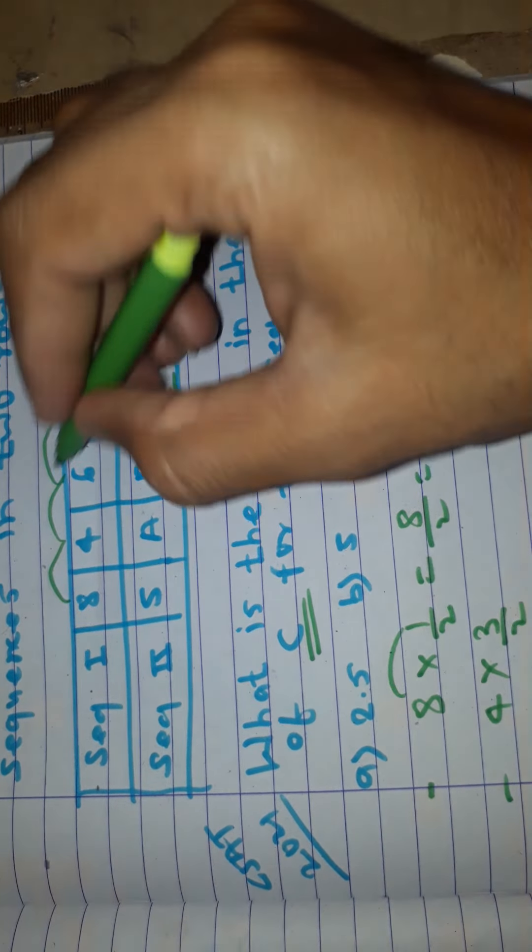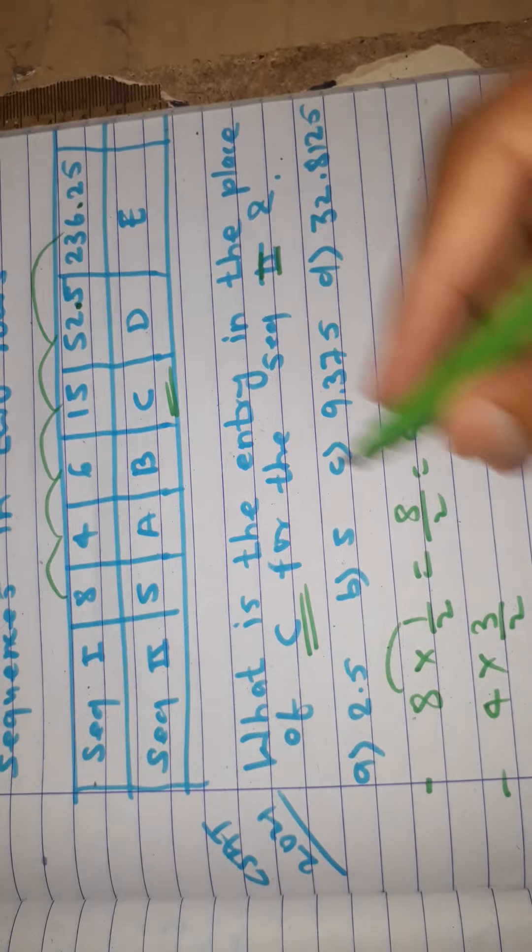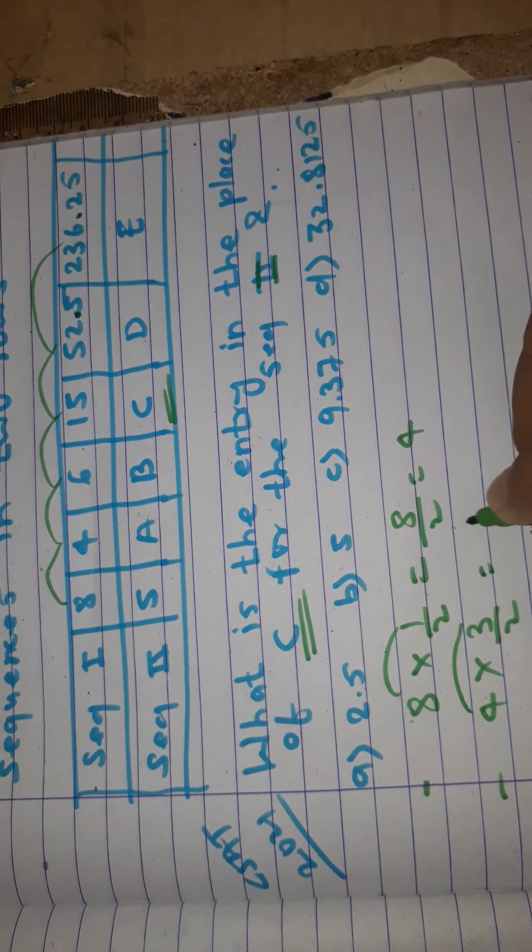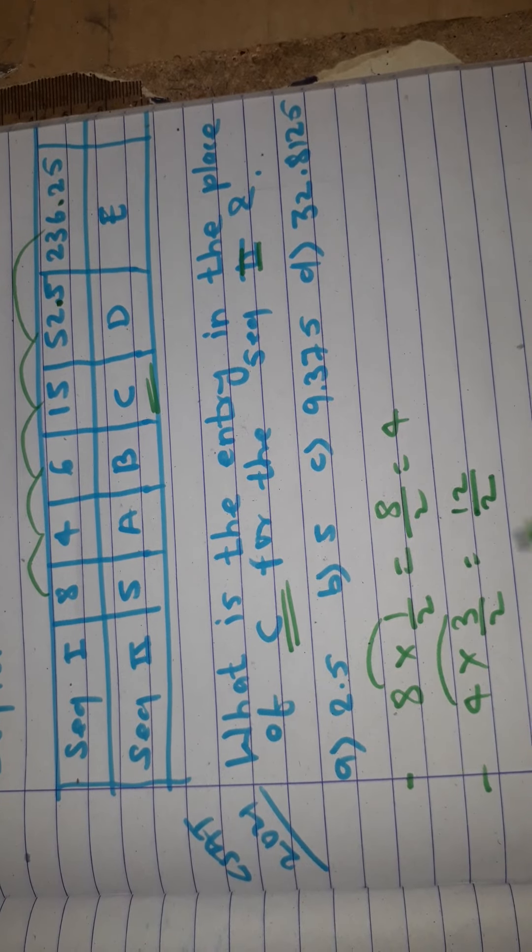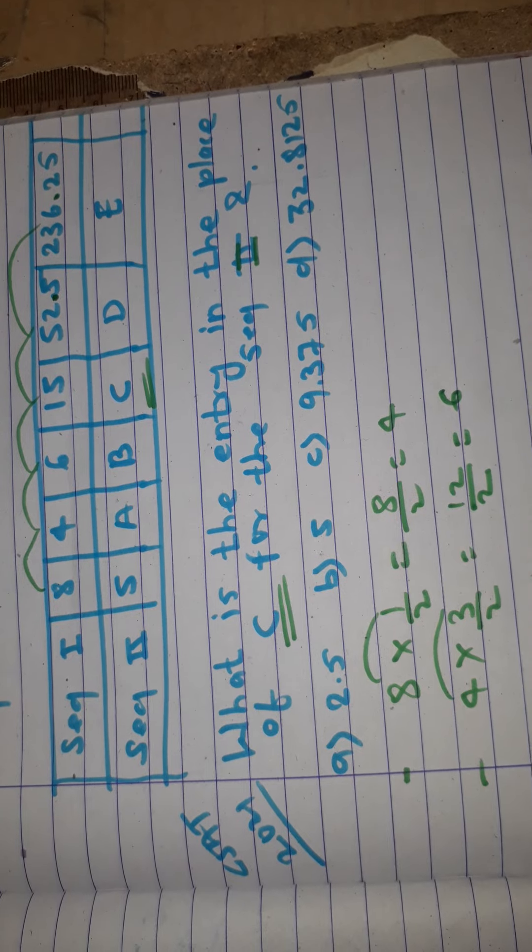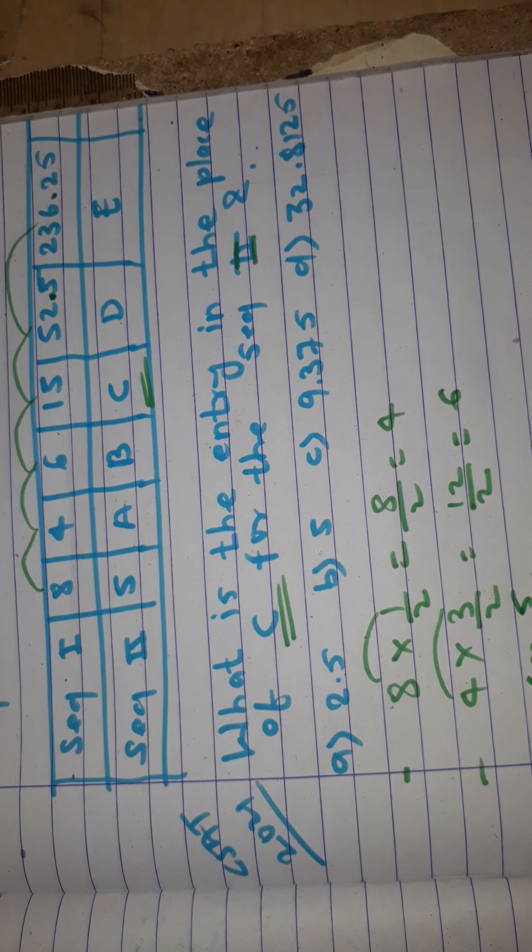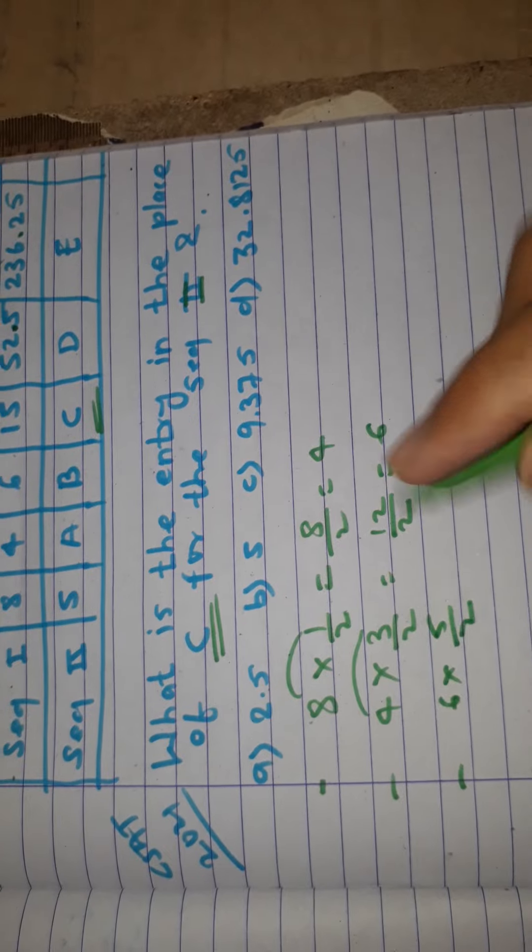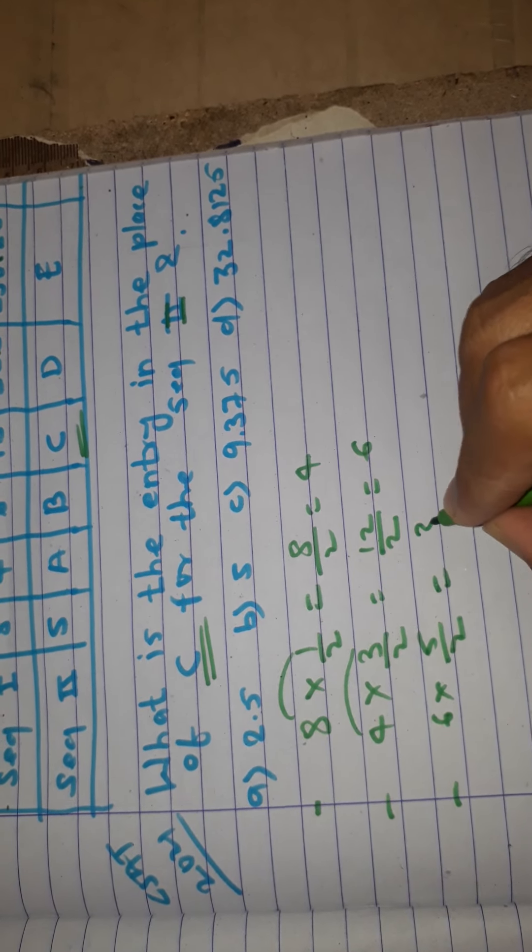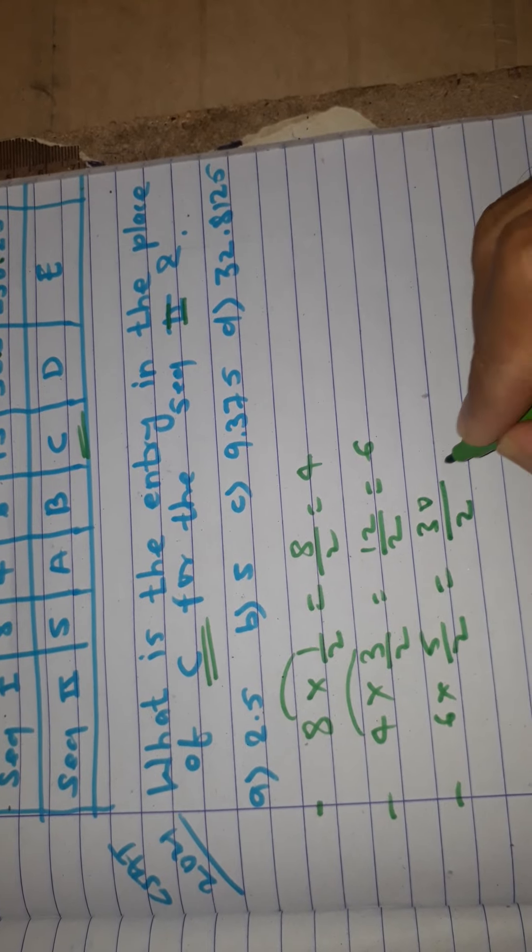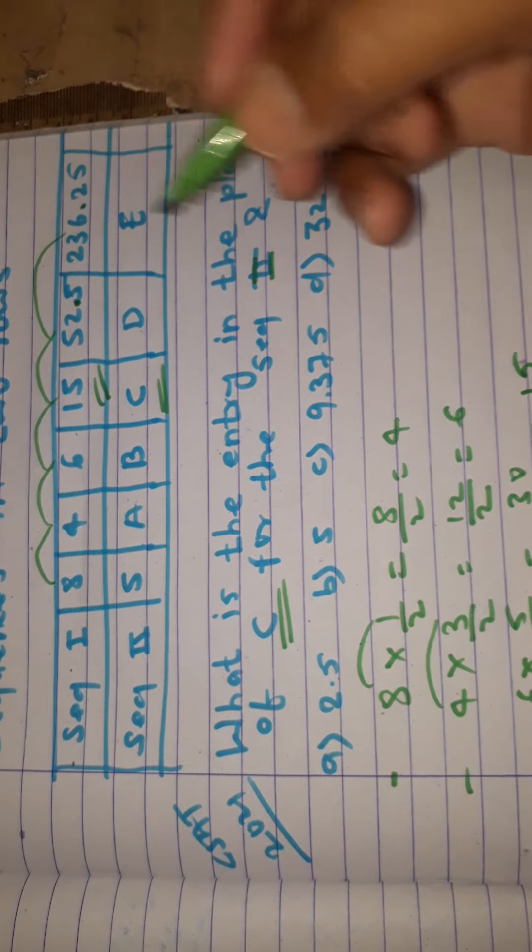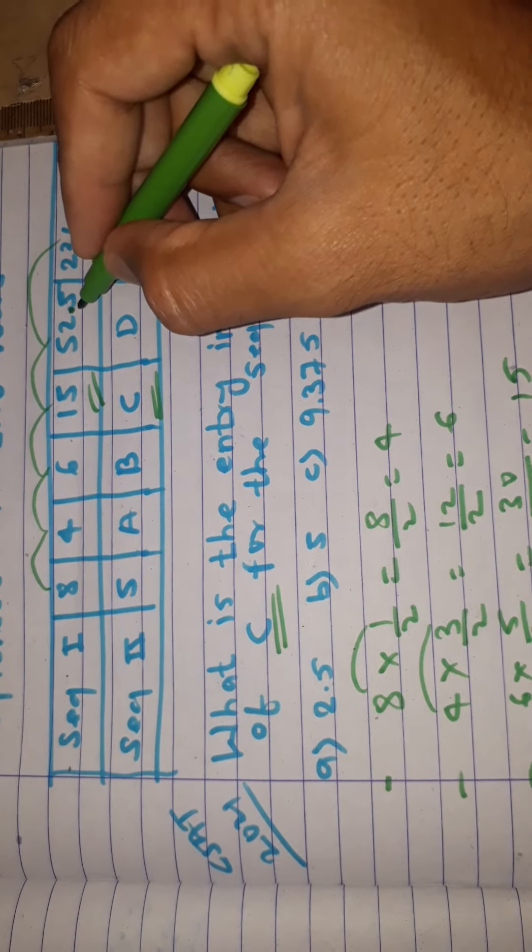4 into 3/2 gives us 6. Then 6 into 5/2: 6 into 5 is 30, divided by 2 equals 15. Now we have the value 15 to 52.5.